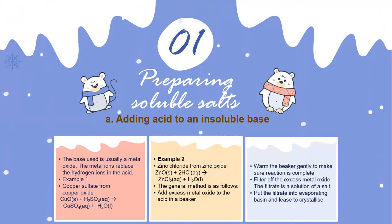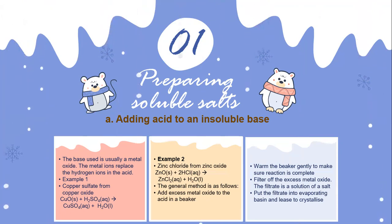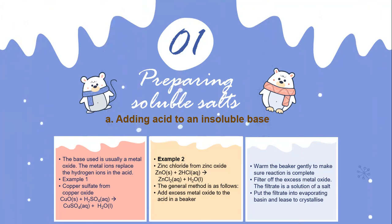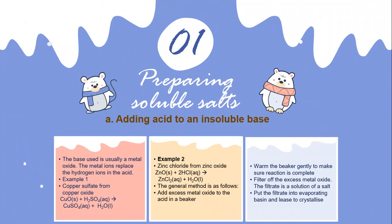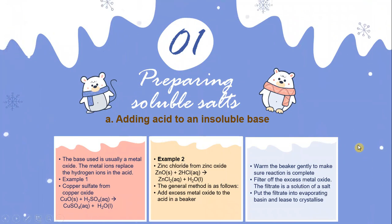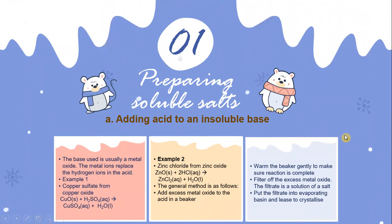Example 2: zinc chloride from zinc oxide. The equation is ZnO + 2HCl → ZnCl2 + H2O. The general method is as follows: add excess metal oxide to the acid in a beaker, then warm the beaker gently to make sure the reaction is complete.